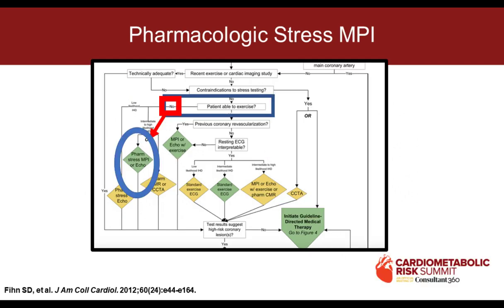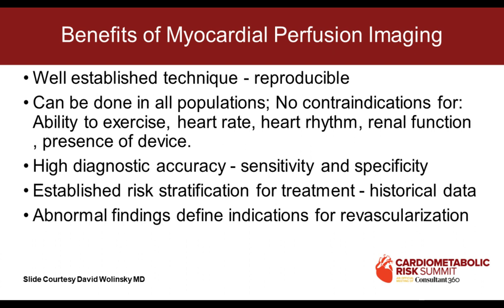If they can't exercise, they're candidates for pharmacologic stress testing, primarily with myocardial perfusion imaging — done much more often than dobutamine stress test or MR stress testing. Myocardial perfusion imaging has been around 40 years. It's well-established and reproducible. It can be done in all populations regardless of whether they can exercise or not, whether heart rate is fast or slow, regular or irregular, or whether they have chronic kidney disease. It's sensitive and specific, with a tremendous body of historical data for risk stratification.